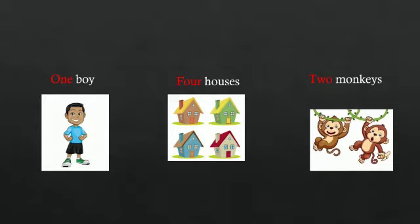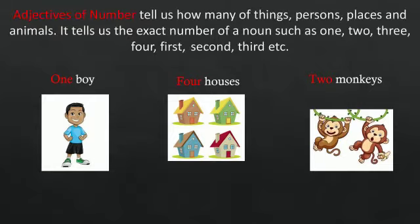Therefore, adjectives of number tell us how many of things, persons, places and animals. It tells us the exact number of a noun such as 1, 2, 3, 4, 1st, 2nd, 3rd etc.